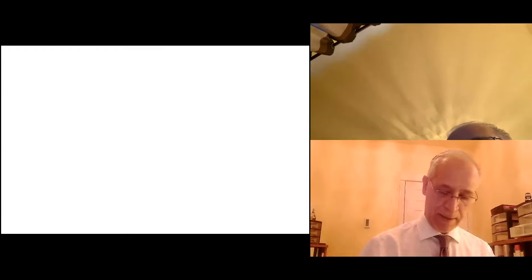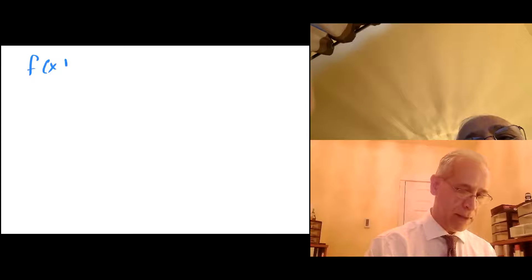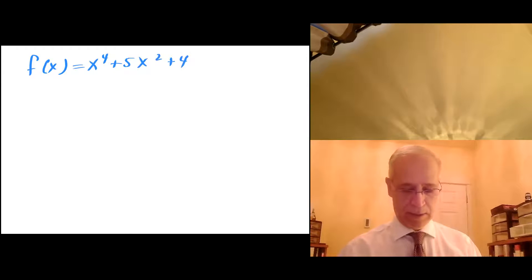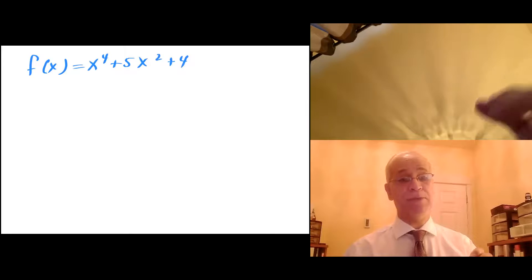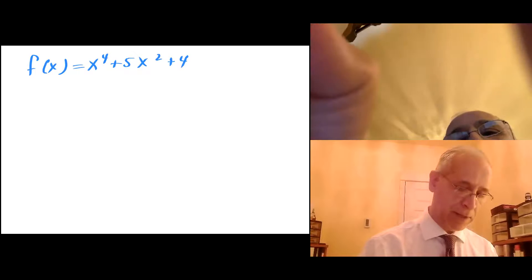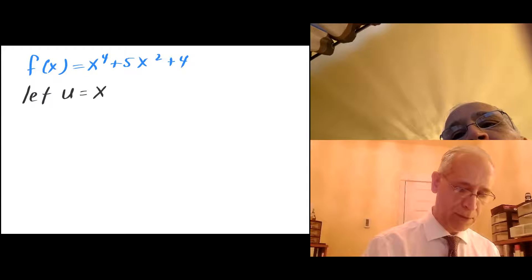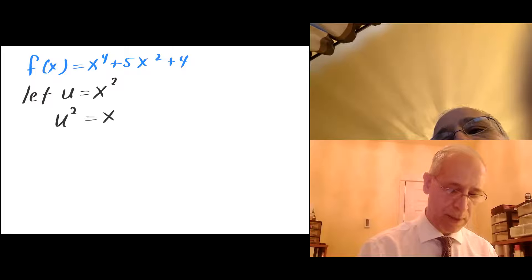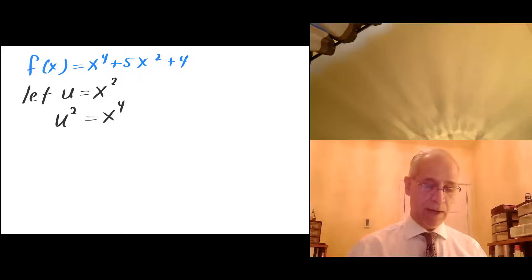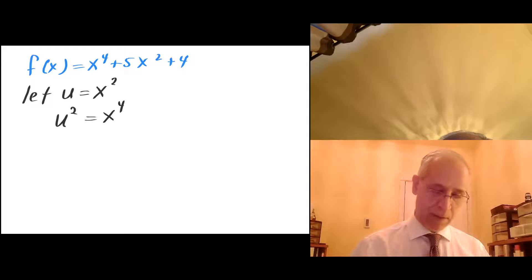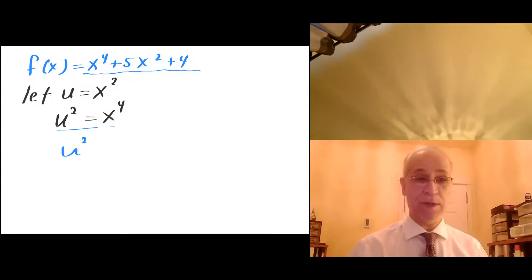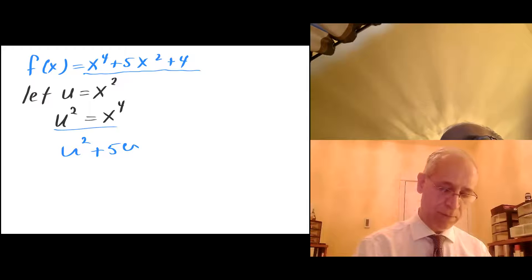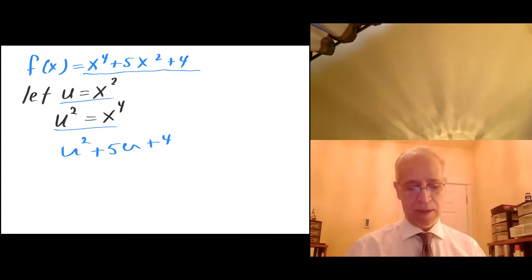Suppose I write this as f of x equals x to the fourth plus 5x squared plus 4. I'm going to use a substitution just as a reminder — you don't have to do this. I'm going to let u equal x squared. If u equals x squared, then u squared must equal x to the fourth by squaring both sides. So I can rewrite x to the fourth as u squared, and 5x squared as 5u, giving me u squared plus 5u plus 4.